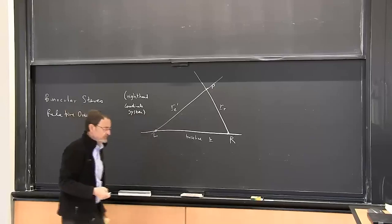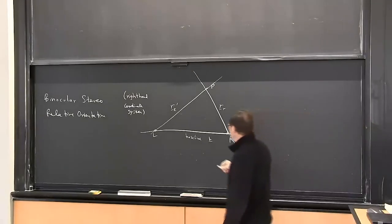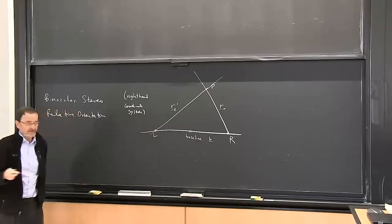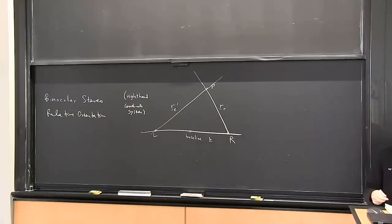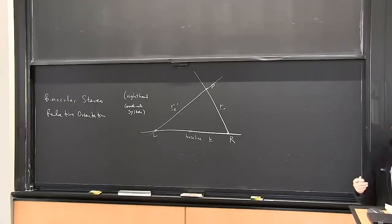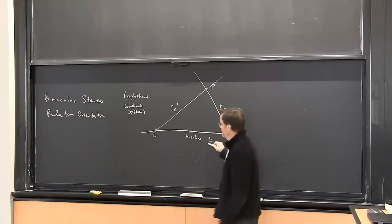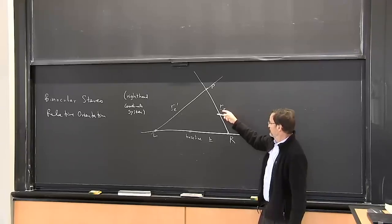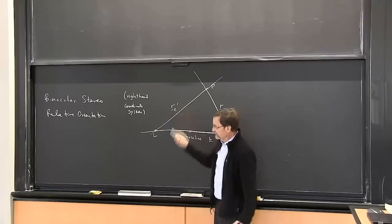I have to pick a coordinate system — I could pick left, right, or for symmetry a center one. I want to make sure that the results aren't biased by my choice of coordinate system: if I had picked the left coordinate system, I should get the same answer as if I picked the right. In this case, the baseline is measured in the right coordinate system. The prime notation indicates that we've converted from the left coordinate system to the right coordinate system.